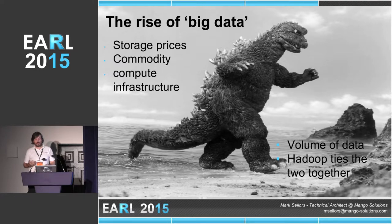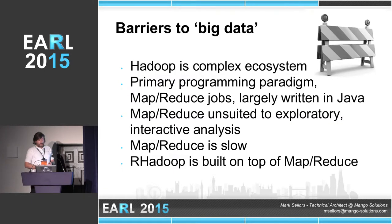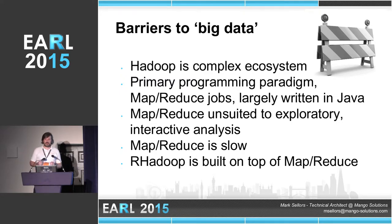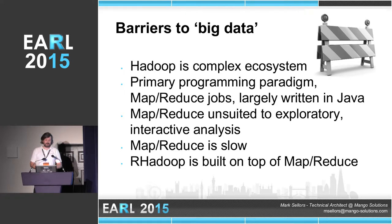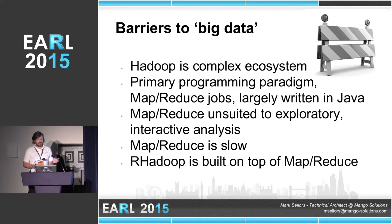The Hadoop project ties these two things together into, arguably, a cohesive computing and analytics environment. It covers your storage and covers your analytics with Hadoop MapReduce and some of the other projects built on top of it. The Hadoop ecosystem is extremely complex. In the early days of Hadoop, you had HDFS — the Hadoop Distributed File System — which is your storage layer, and then on top of that you had Hadoop MapReduce, which is the MapReduce programming paradigm.